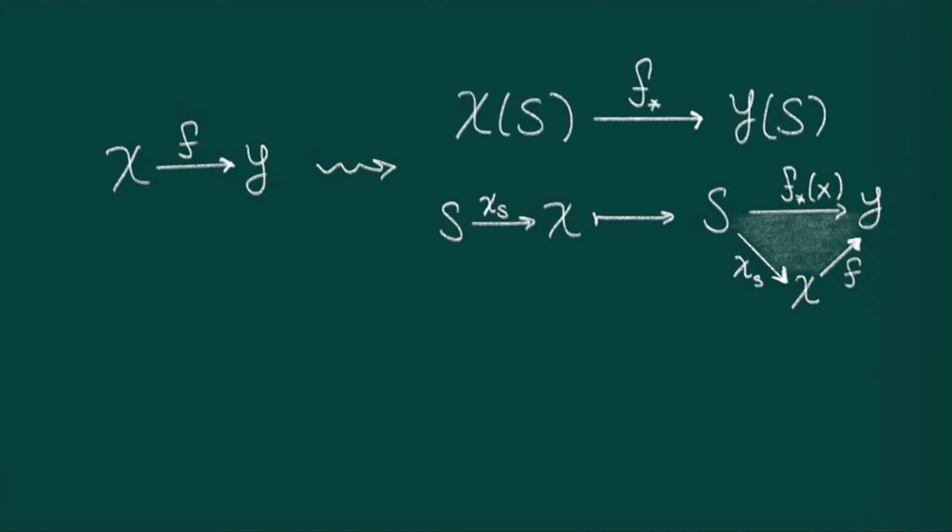So let's return to the case of a general category C, and a map f from x to y. Note that, a priori, this map need not be an association between things, as is the case of posets. However, we can compose f with any s-point of x, which is a map, and obtain an s-point in y, which we'll denote as the push-forward of the s-point of x along y. You should think of this as f evaluated on the s-point.